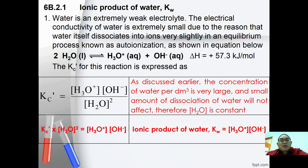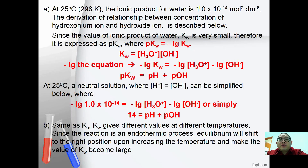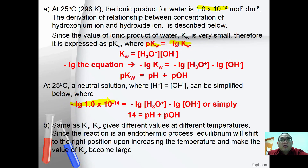Water is an extremely weak electrolyte with very small electrical conductivity because water dissociates itself in a process called auto-ionization: H₂O ⇌ H₃O⁺ + OH⁻. The ionic product of water is Kw = [H₃O⁺][OH⁻]. At 25°C, Kw = 1.0 × 10⁻¹⁴ mol² dm⁻⁶. Since pKw = −log(Kw), at 25°C: 14 = pH + pOH, which is the equation relating pH to pOH.